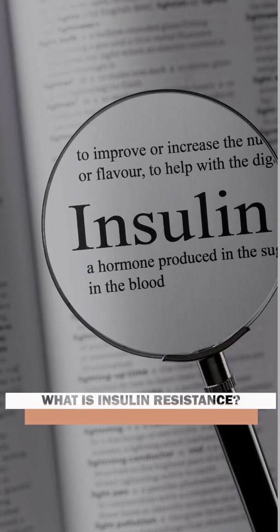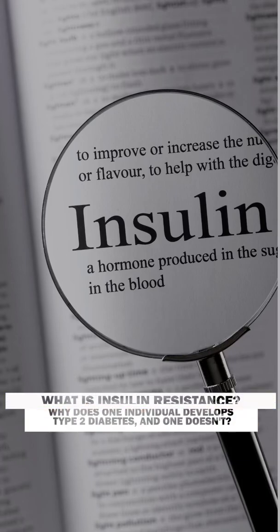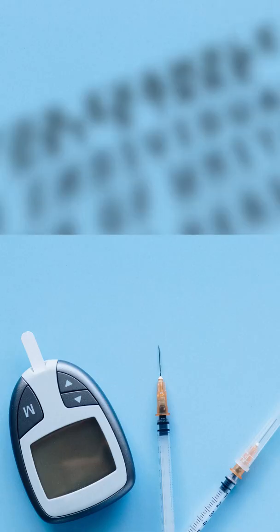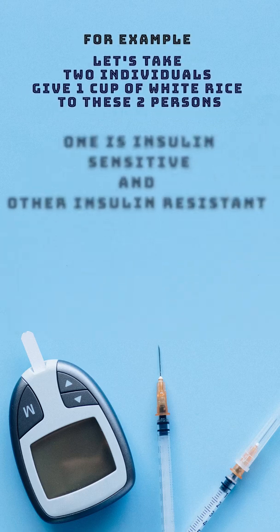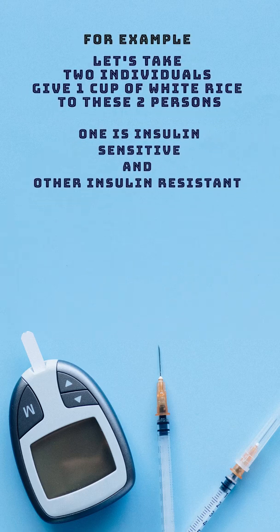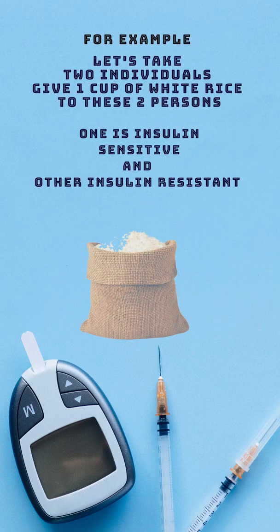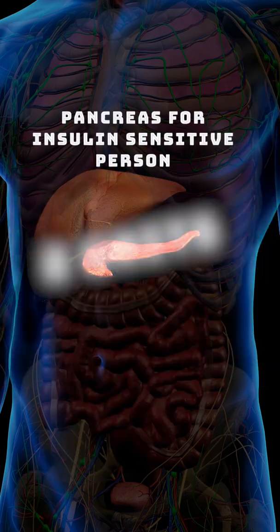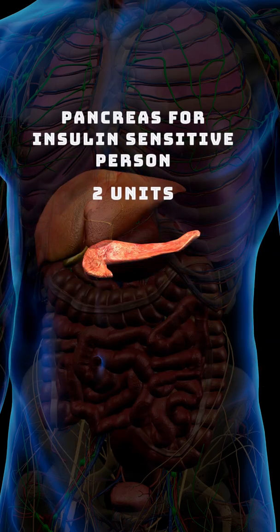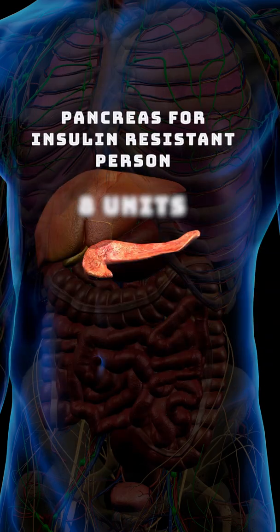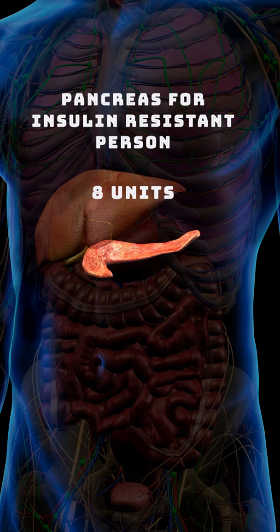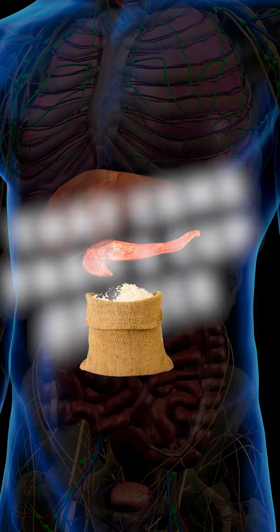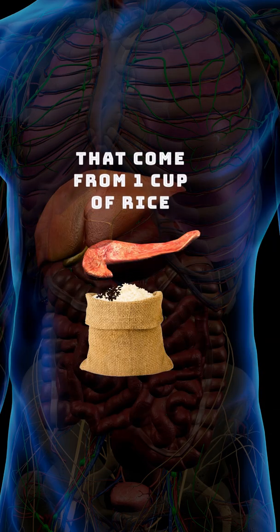So what is insulin resistance, and why does one individual develop type 2 diabetes and the other does not? Let's take two individuals: one is insulin sensitive, the other is insulin resistant, and let's give them one cup of white rice. The pancreas of an insulin sensitive person may need two units, whereas the insulin resistant person might need eight units to process the blood sugar that comes from one cup of white rice.